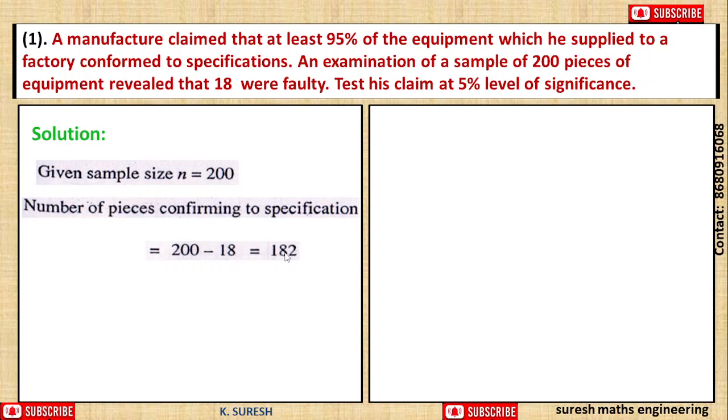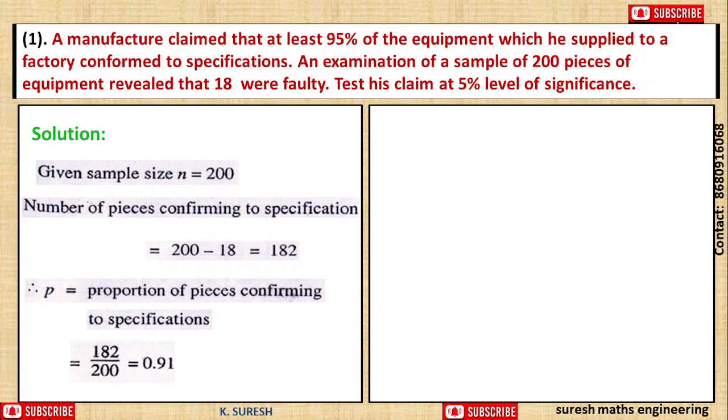The remaining 182 are correct. The proportion of pieces conforming to specifications, small p, is the sample proportion. 182 out of 200 is equal to 0.91, so sample proportion p equals 0.91.